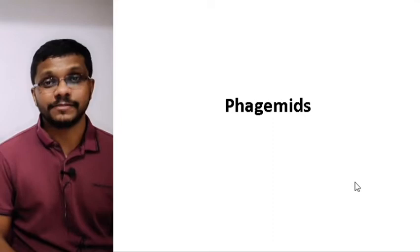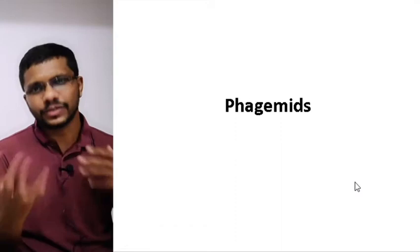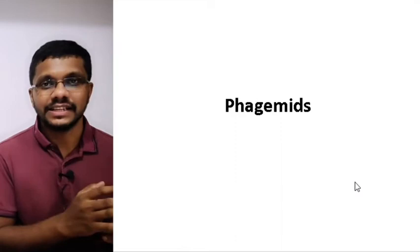In this video I am going to talk about phagemids. Phagemids are essentially a combination of plasmid and M13 vectors. We have seen the cosmids, which are a combination of the lambda vectors and the plasmid with the cos site. The phagemids are a combination of M13 vectors and the plasmid.